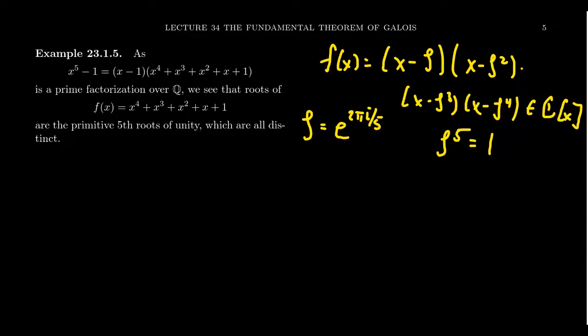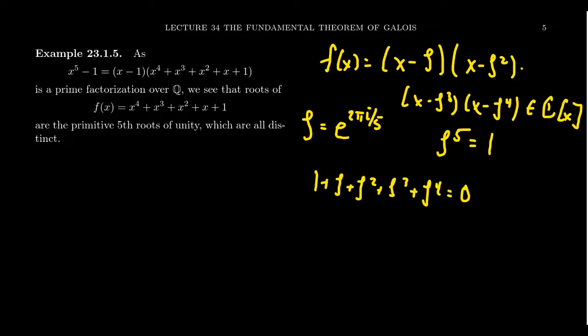We also have the relationship that the sum of all the roots of unity—1 plus zeta plus zeta squared plus zeta cubed plus zeta to the 4th—is equal to 0. The sum of the five 5th roots of unity equals 0, and this is true for roots of unity in general because of this type of factorization.